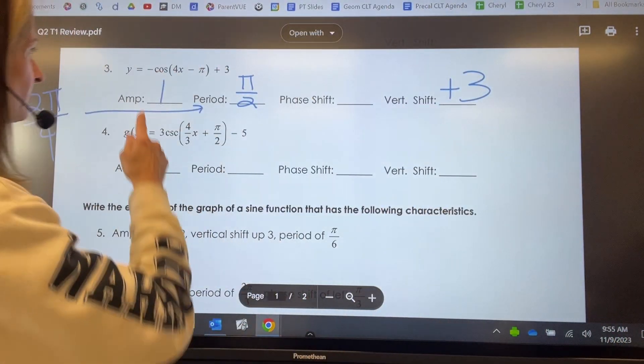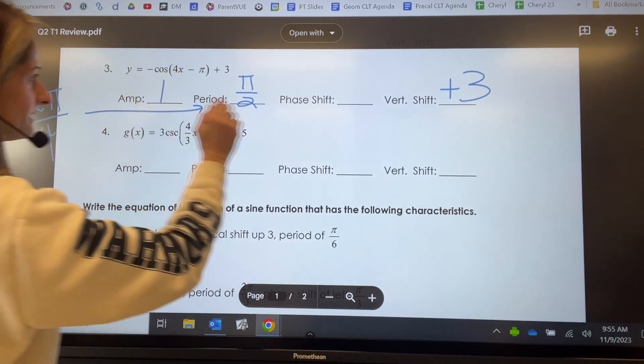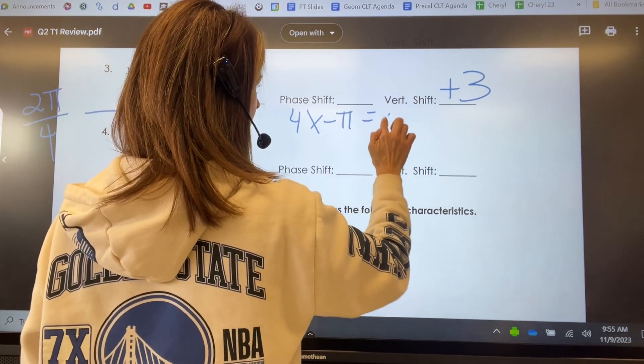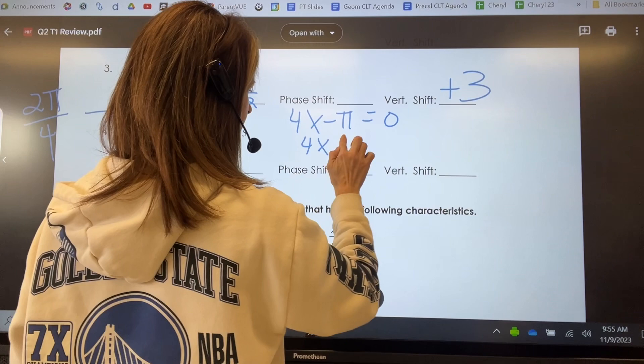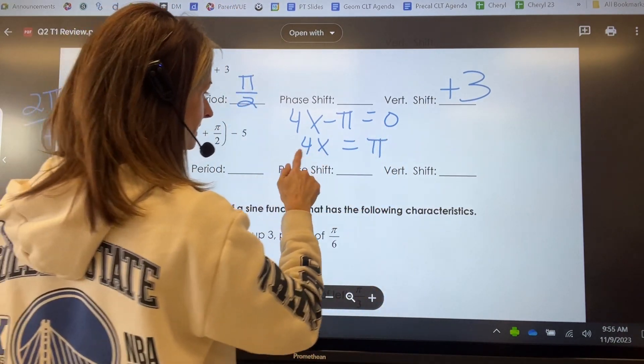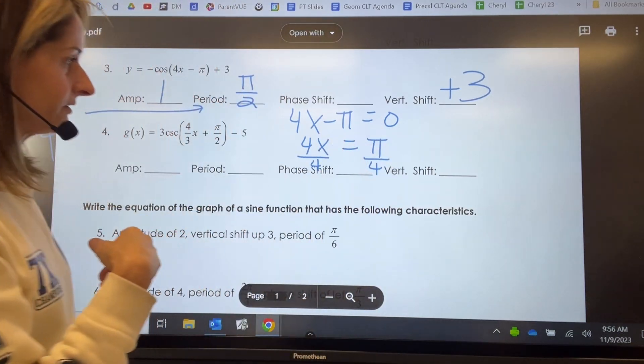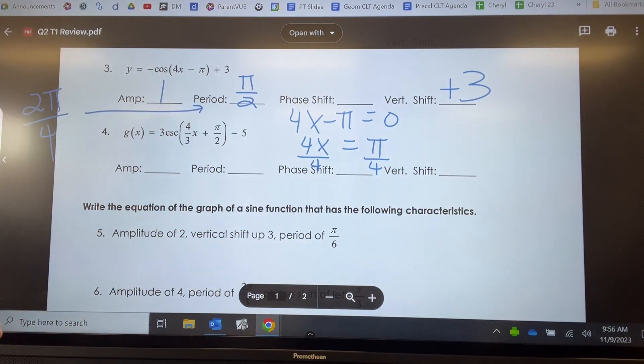All right, so now phase shift. We're going to set this parentheses equal to zero. So 4x minus pi equals zero. That's going to be 4x equals pi, and we're solving for that x. So when you divide by four, notice it ends up being a positive value. So it's just going to be plus pi over four.